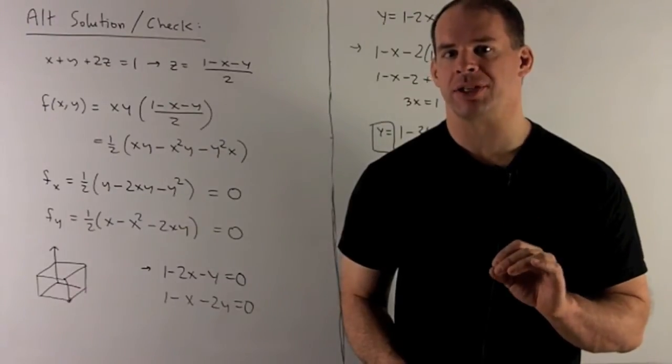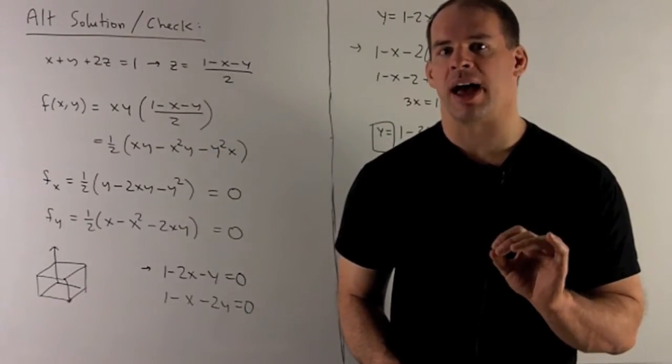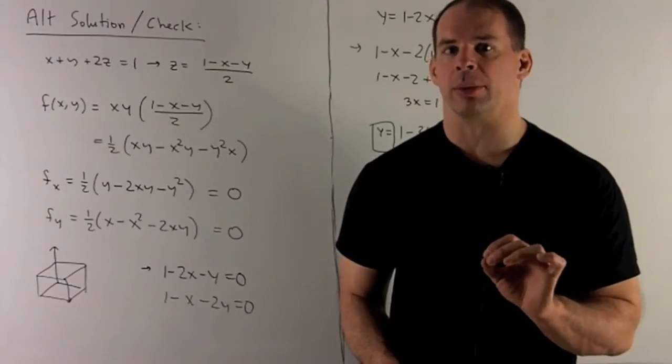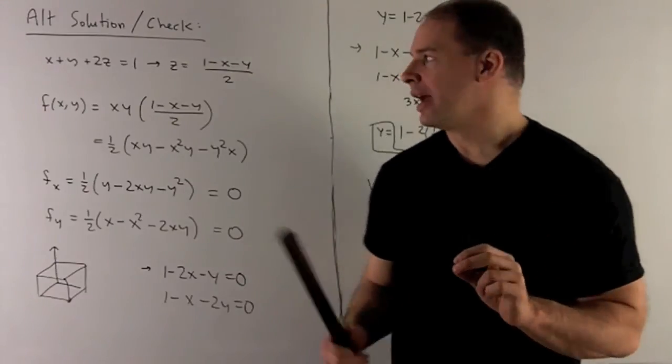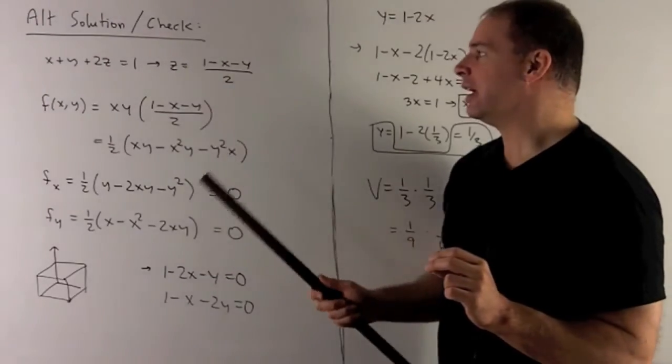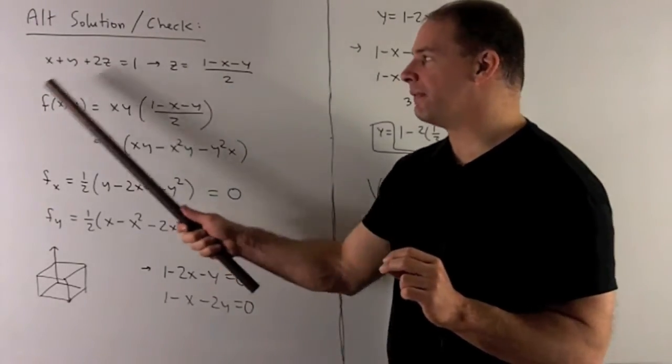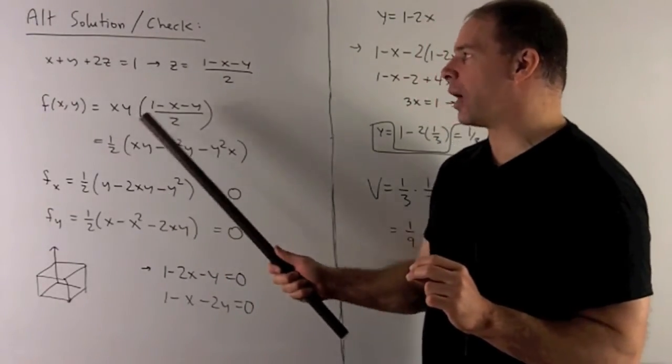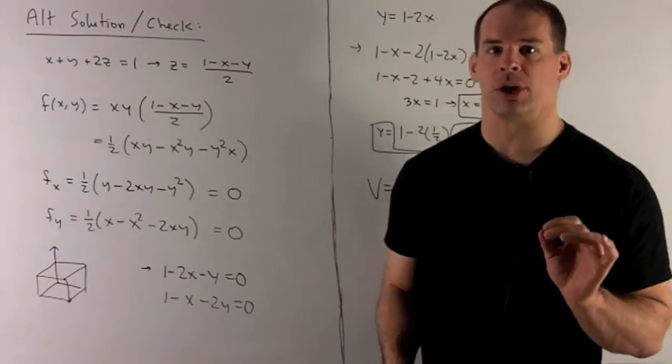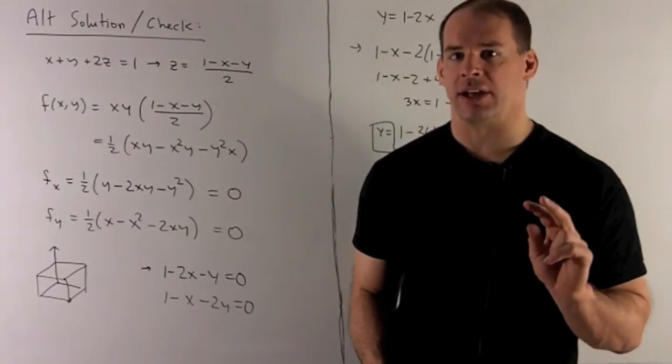Lagrange multipliers are probably too fancy for this problem. We could solve it just by going to two variables. So if you know it, I take the equation of the plane, I solve for z, and then for our volume function, I could just write x, y times something in terms of x and y, get it all down to two variables.